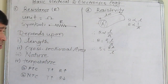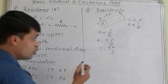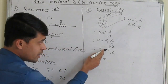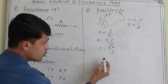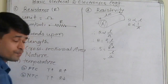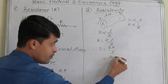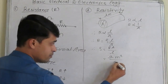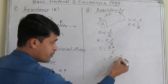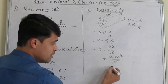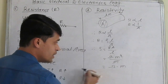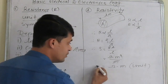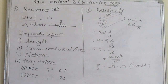Now we will find out the unit for resistivity. We are measuring resistance in Ohm, area measured in meter square, and length in meter. So it equals Ohm times meter squared divided by meter, the meter cancels, giving Ohm-meter. This is the unit of resistivity.